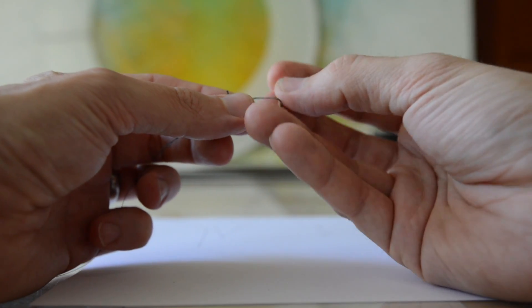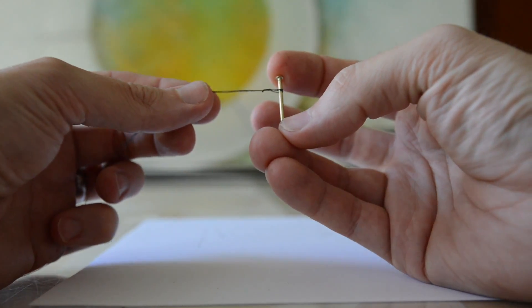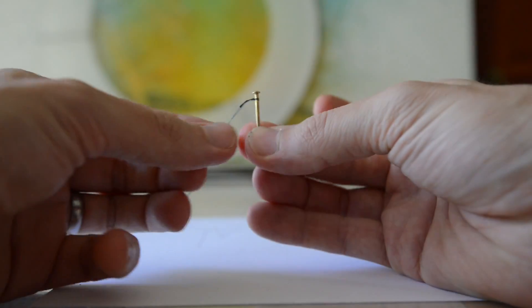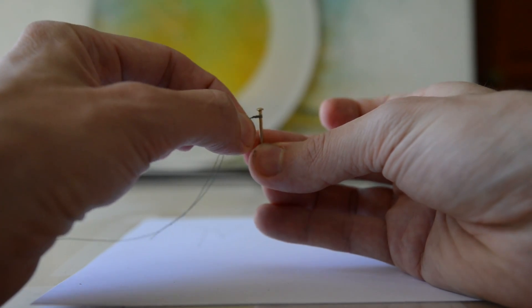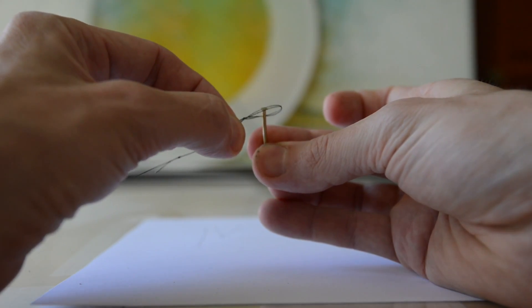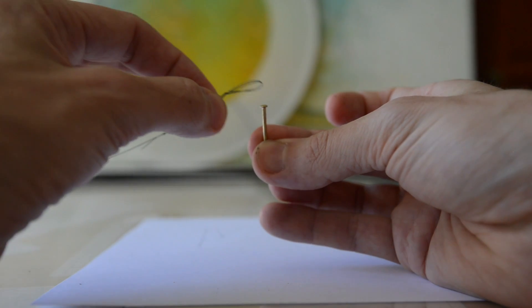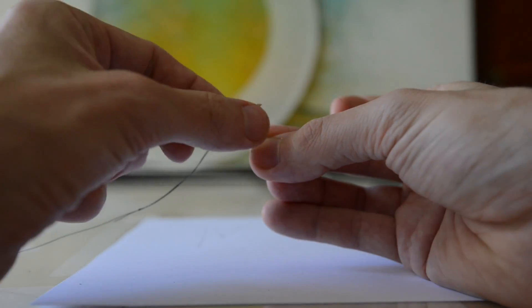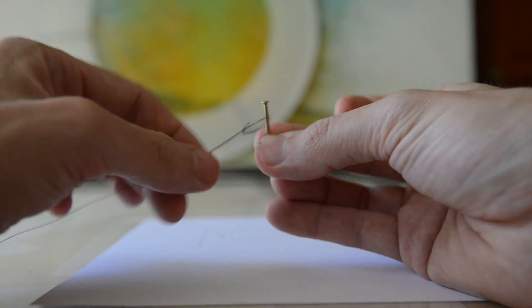So now if we take our nail and we pass it through there, it goes tight. What that second little loop that we tied means is we can take that, grab that, and it immediately comes off and is removable. So it goes on like that and comes off like that.